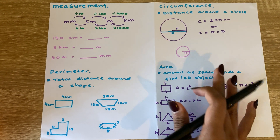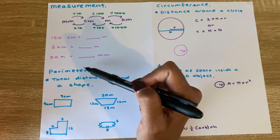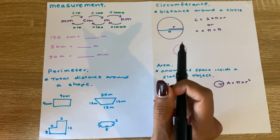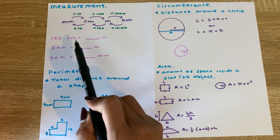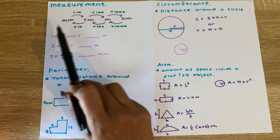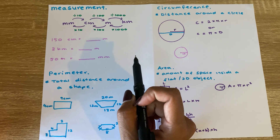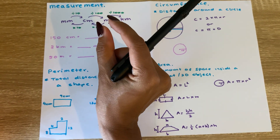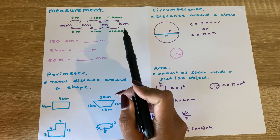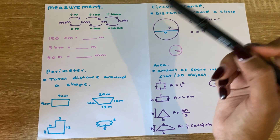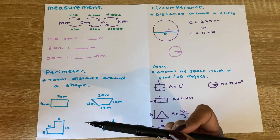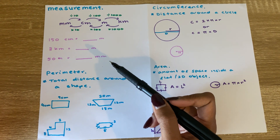Hello everybody, welcome to today's video. Today we're going to be looking at measurement, perimeter and area. The things we're going to look at in terms of measurement today is measuring distances. Our units when we look at distance are millimeters, centimeters, meters and kilometers. Millimeters are tiny, centimeters a bit bigger, meters maybe the size of a desk, and kilometers the distance from your home to school.